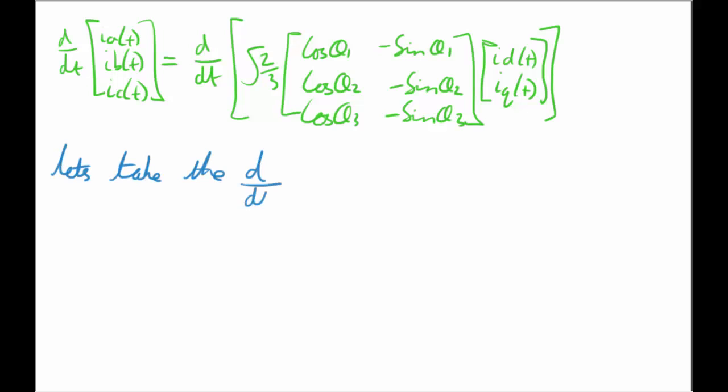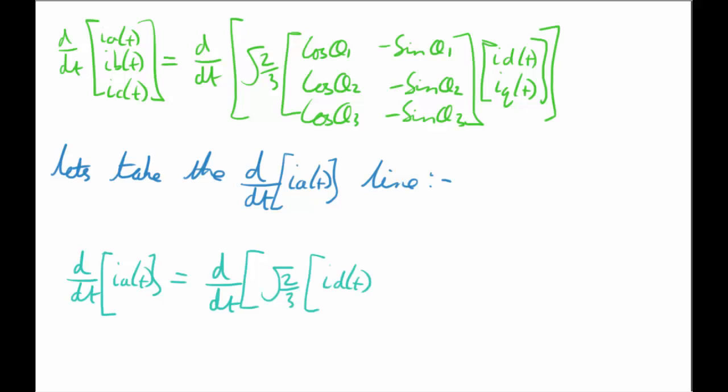So how do we do this? Let's just take the first or the top line which is dI_a/dt. So we can just take the first section out and then we can replicate it all the way down. It's fairly similar. So when we multiply across the matrix we get this.